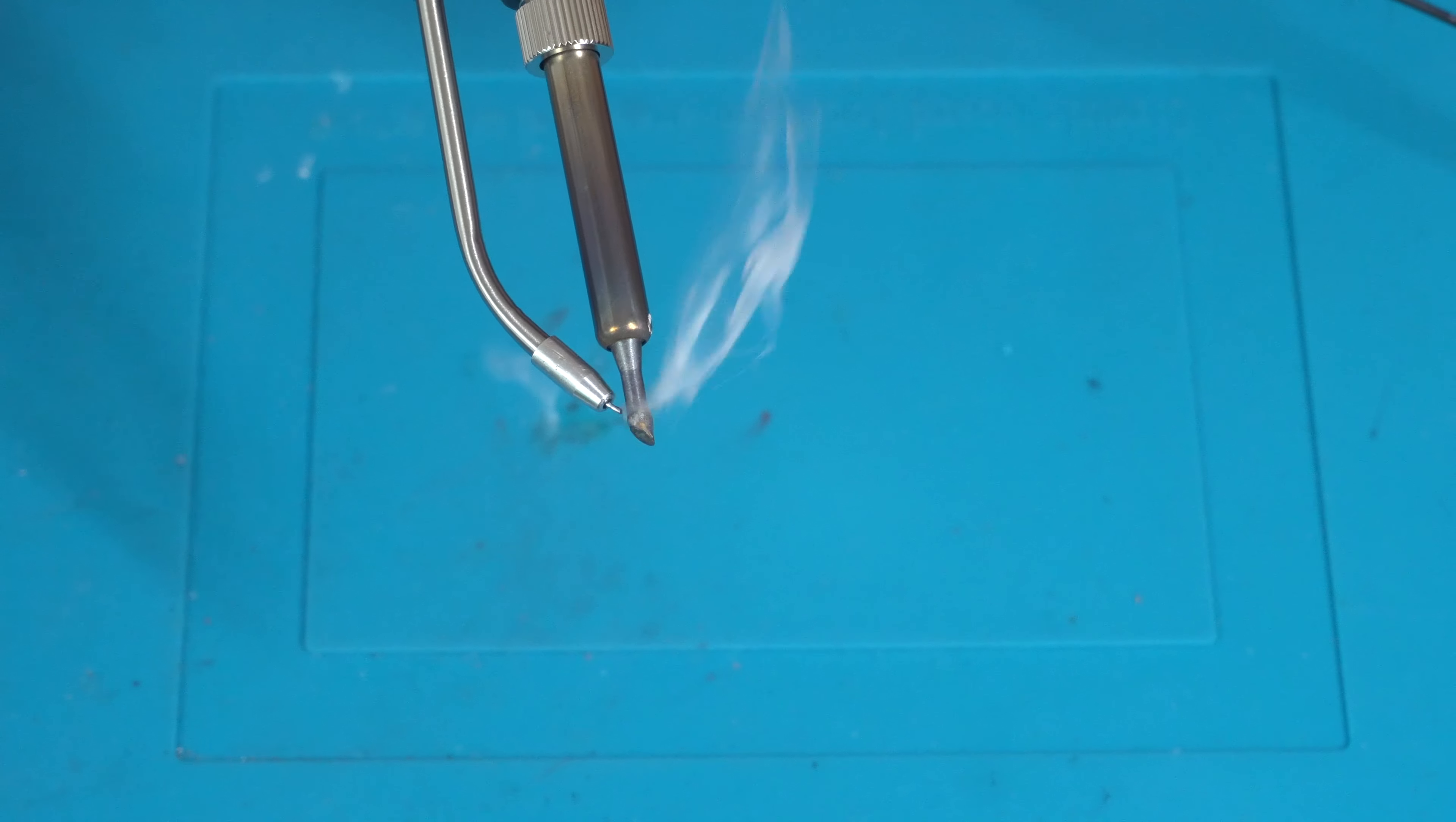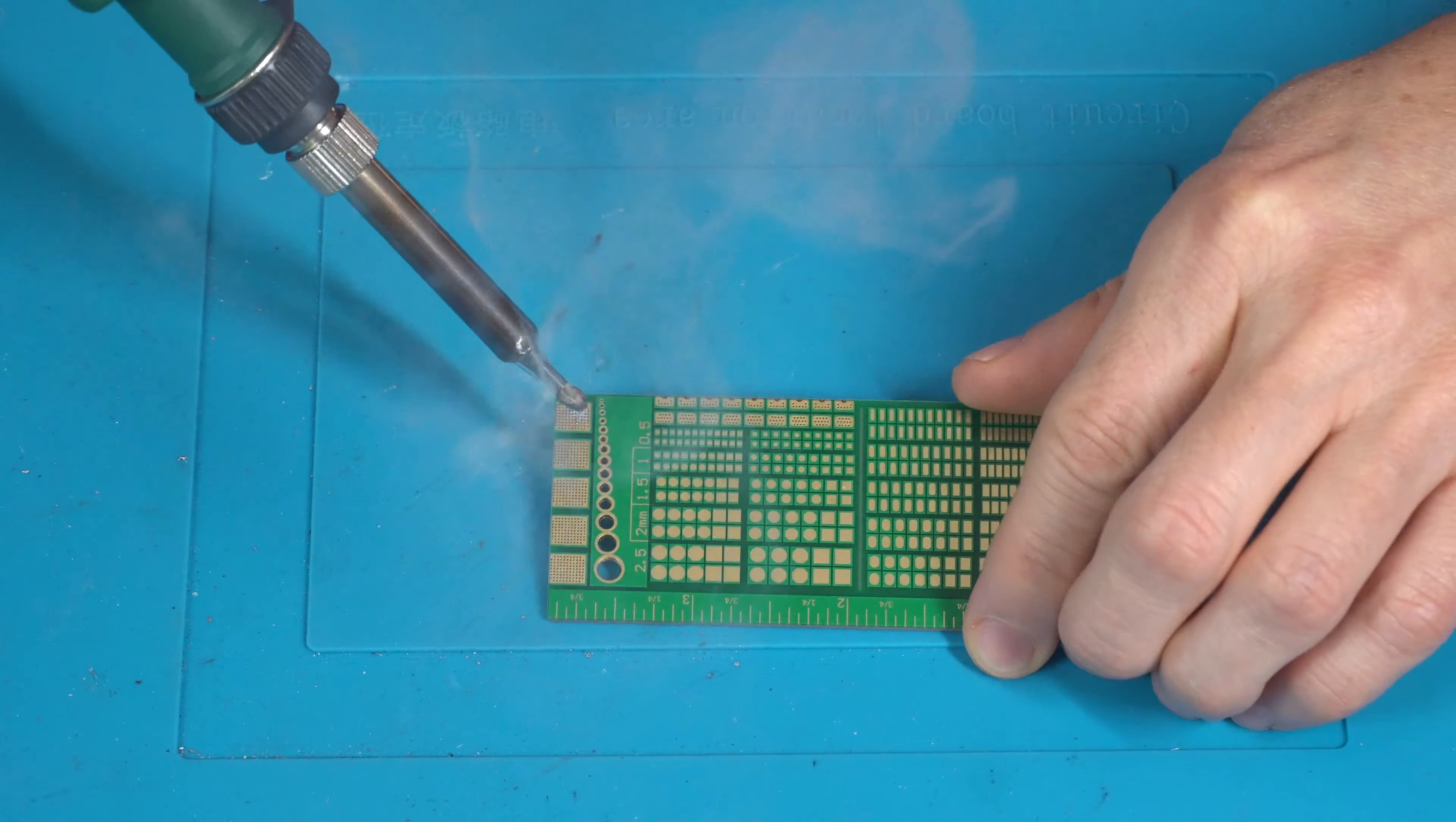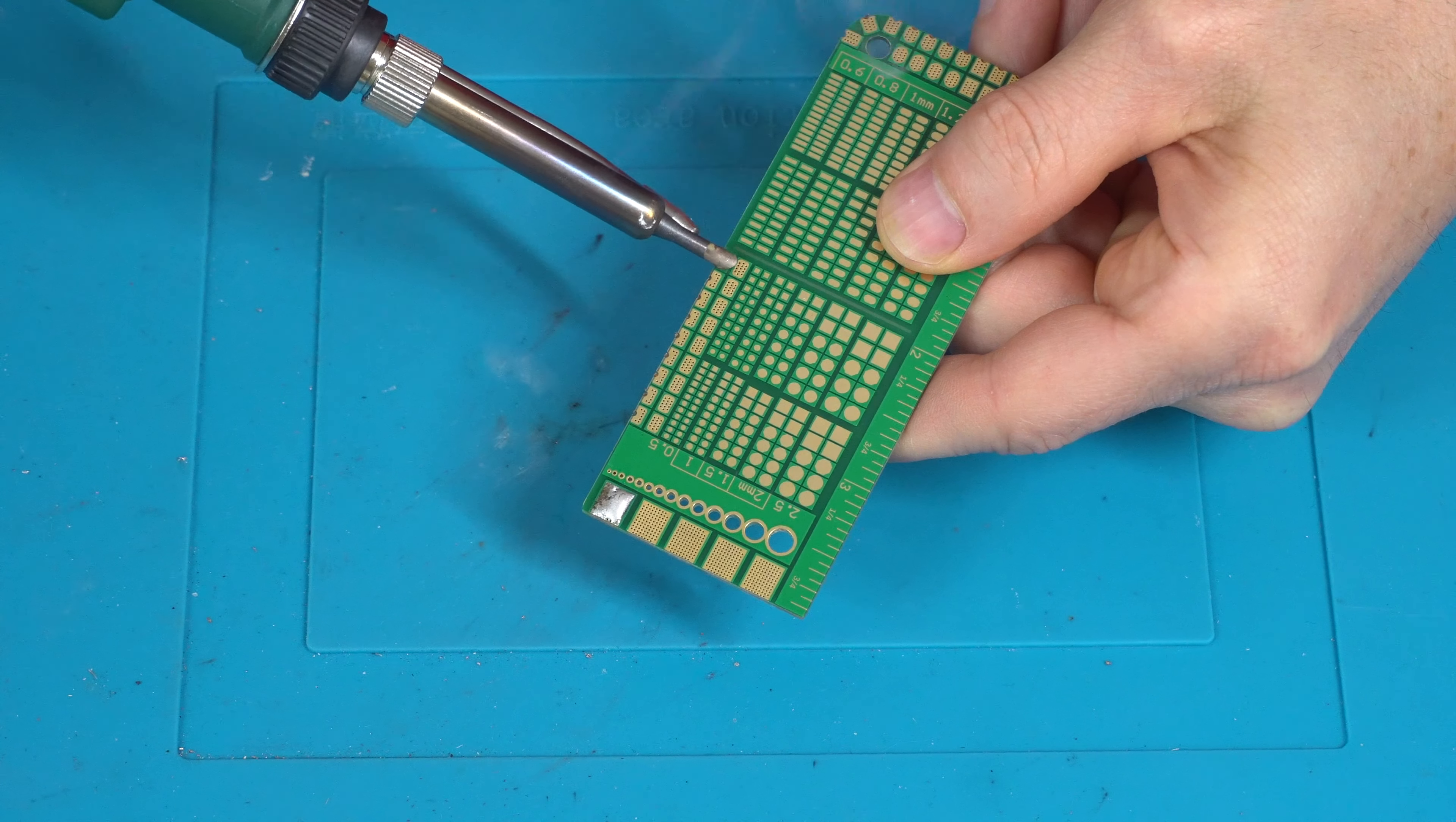So once you get it hot and ready, it's really easy to use. Just put the tip right where you want it, start to pull the trigger, and it feeds the solder out nice and convenient. Whether you're working on circuit boards or tinning up some wires, it makes it really easy to do that with the free hand.